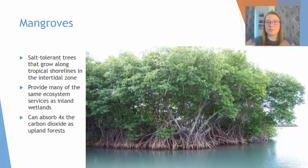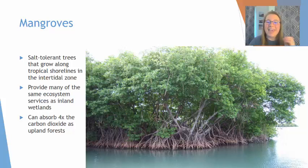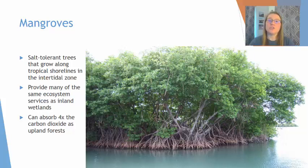Mangroves are a special type of wetland ecosystem and these are made of salt tolerant trees that grow along the shorelines of the intertidal zone, so the area between high tide and low tide. These provide a huge amount of ecosystem services, particularly the service of shoreline stabilization, and these can absorb four times as much carbon dioxide as an upland forest. So they're really important to maintain and preserve.